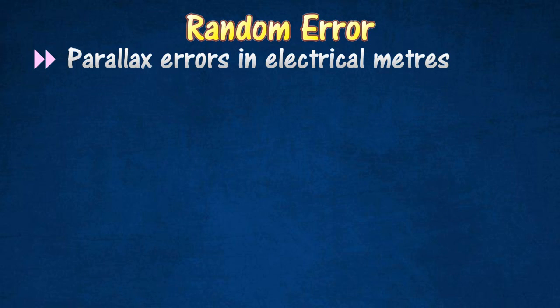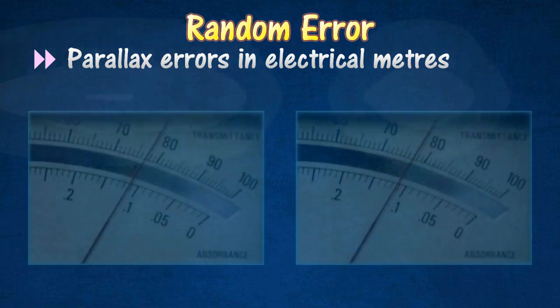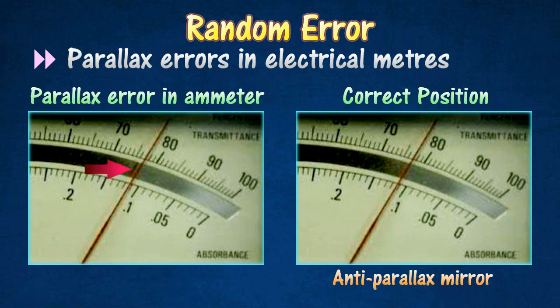Electrical meters normally come with an anti-parallax mirror. To avoid parallax error, the position of the eye should be adjusted so that the image of the pointer in the mirror is directly under the pointer. In the correct position, the image of the pointer cannot be seen.